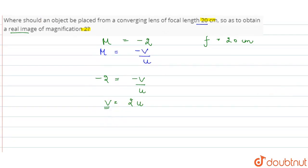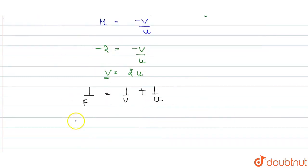Now the lens formula, what is it? 1 upon f is equal to 1 upon v plus 1 upon u. So 1 upon f we have given, that means f is equal to 20. Equals to, we can put 2u plus 1 upon u.